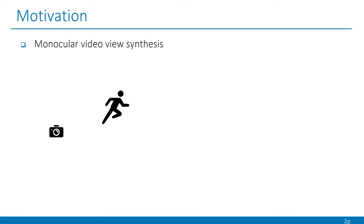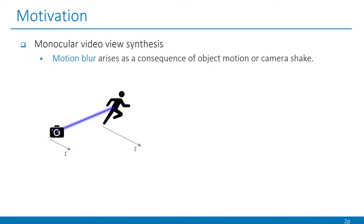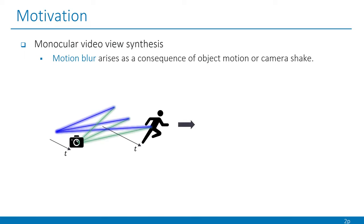Recently, several methods of dynamic view synthesis for casually captured monocular video have been proposed for easier applications. However, motion blur arises as a consequence of either object motion or camera shake caused by the accumulation of light during video acquisition.